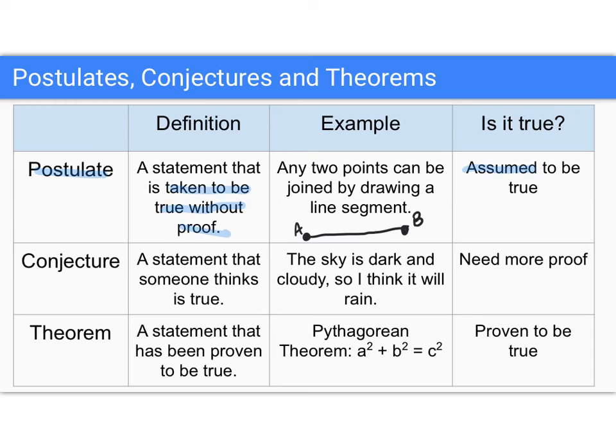Now, a conjecture is something that you think is probably true. Now, there's a lot of things that I think might be true. Here's an example: the sky is dark and cloudy, so I think it will rain. I'm making a prediction here, right? It might be a reasonable prediction, but it's not proven. It's just something that I am guessing is true. I might be guessing with good evidence, but I can't prove it, so I need more proof if I want to say that a conjecture is true.